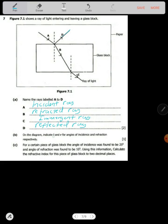On the diagram, indicate I and R for angles of incidence and angles of refraction respectively. So how can you indicate the angle of incidence? So the angle of incidence is this angle formed here. So we can indicate there. It's also this angle formed here.